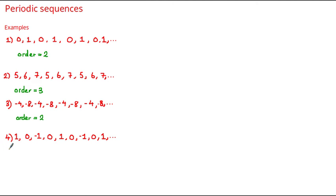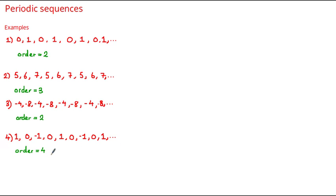In this sequence we have 1, 0, minus 1, 0, 1, 0, minus 1, 0, then 1, and so on. This is also a periodic sequence that has a mix of positive and negative terms. If we look closely at the terms we can see that there are four numbers before the sequence repeats itself: 1, 0, minus 1, and 0, and therefore the order is equal to 4.